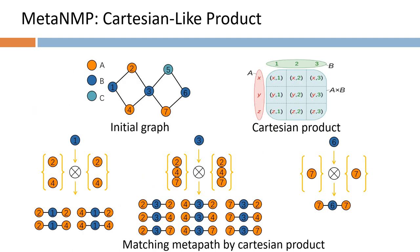Metapath instance matching can be quickly performed by Cartesian-like products of vertices on the set of different types of neighbors. Thus, metapath instances can be generated efficiently on the fly. The pre-processed metapath instance matching is no longer needed, and the significant memory consumption caused by storing metapath instances is also avoided.